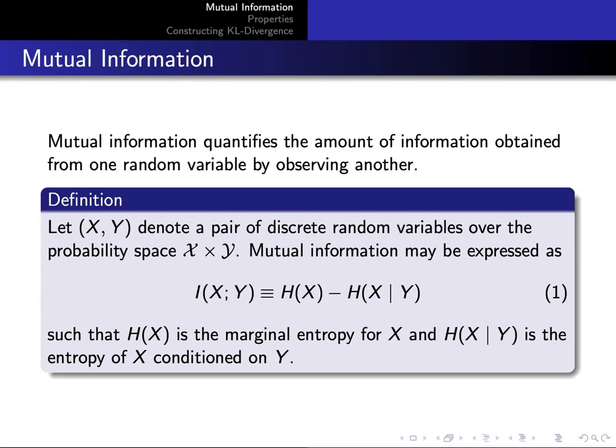We first say that mutual information represents a reduction in uncertainty for one random variable after viewing another. Therefore, it is defined as a difference between marginal and conditional entropies.